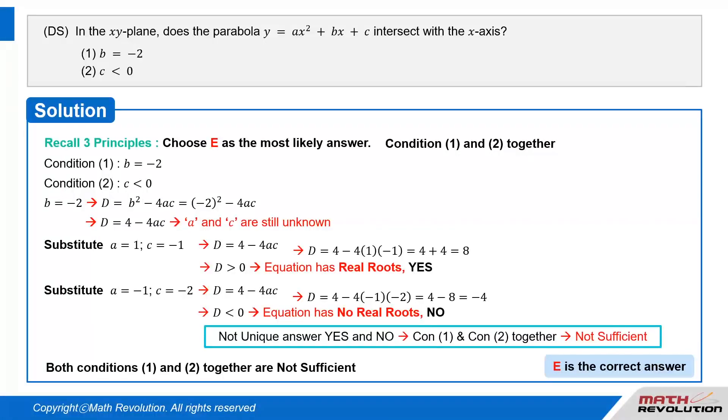The answer is not unique, both yes and no, so conditions 1 and 2 combined are not sufficient. Both conditions 1 and 2 together are not sufficient. So, e is the correct answer.